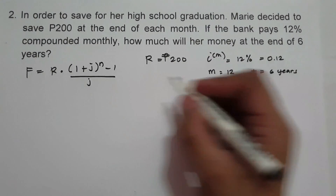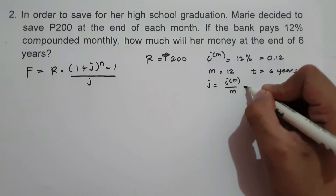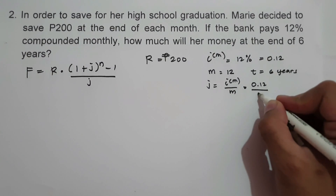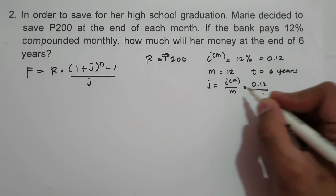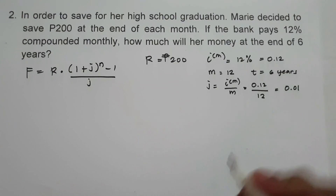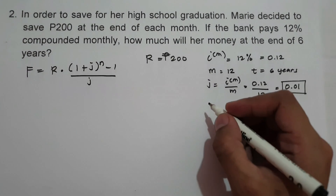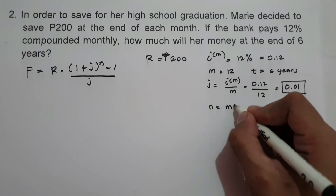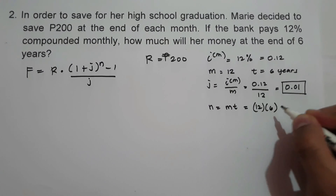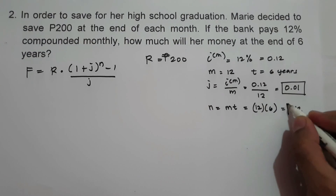Let us find the value of j using i raised to m over m. I raised to m is 0.12, and m is 12, so j equals 0.01. Then let us find the value of n, which is m times t: 12 multiplied by 6 equals 72. So n equals 72.